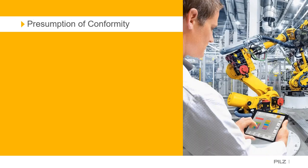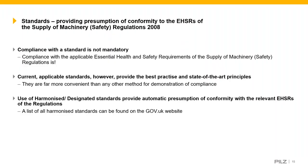Regarding presumption of conformity: compliance with the standard is not mandatory, but compliance with the applicable essential health and safety requirements of the Supply of Machinery Regulations is. Use of the standards gives you this presumption of conformity and it's best practice. If a machine type is completely different and standards don't fully cover it, other considerations may apply, but you must justify and demonstrate how risk has been managed. Use of harmonized or designated standards provides automatic presumption of conformity and is the best way to ensure compliance.